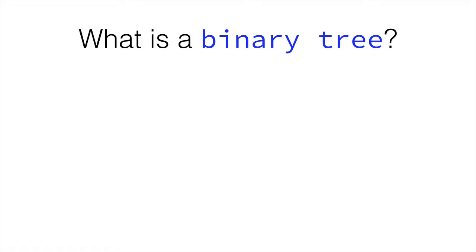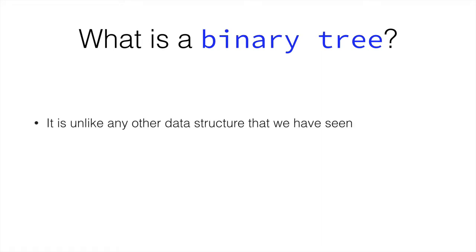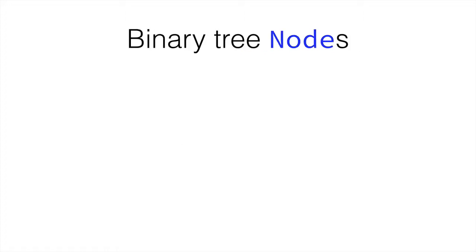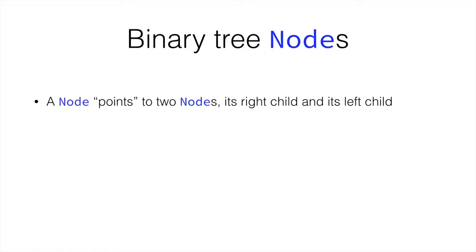What is a binary tree? A binary tree is different — it is not a sequence and it's not a group of objects. It is a branching structure just like a tree. A binary tree has nodes. A node points to two other nodes, and a node can have a right child and a left child — those are the two nodes it's pointing to.